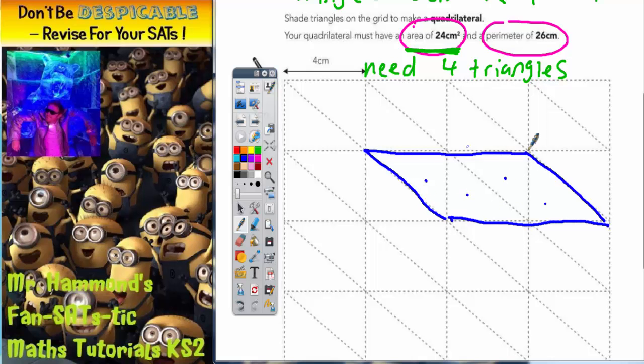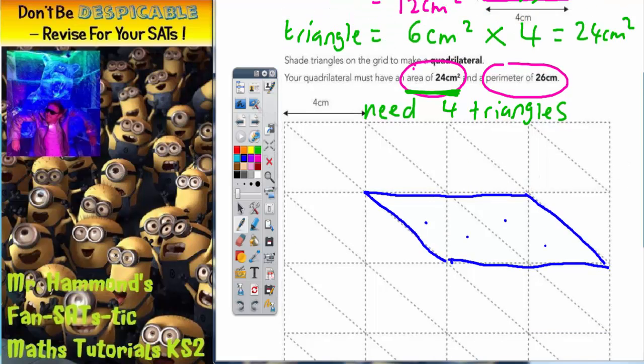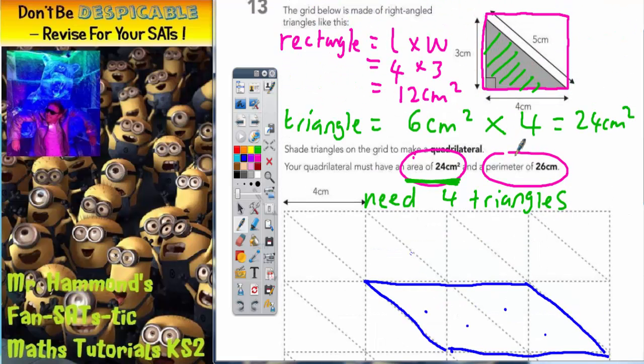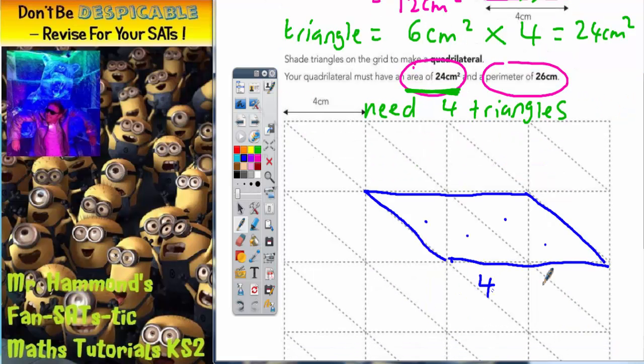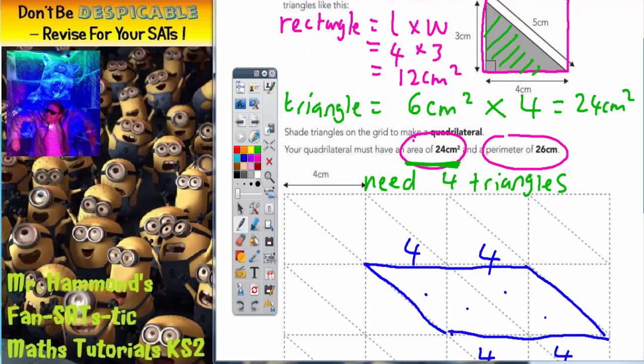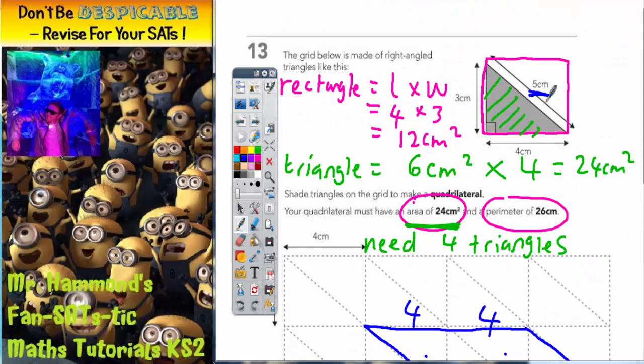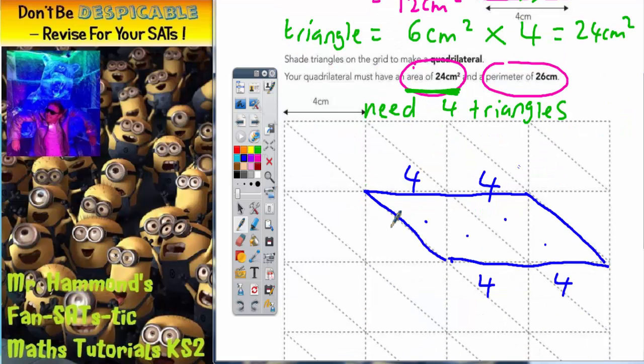Again, we need to try how long the perimeter is. Well, this distance is 4, so these distances across the top are 4's. And the slanted distance is this 5 here. So this is a 5, and this is a 5.